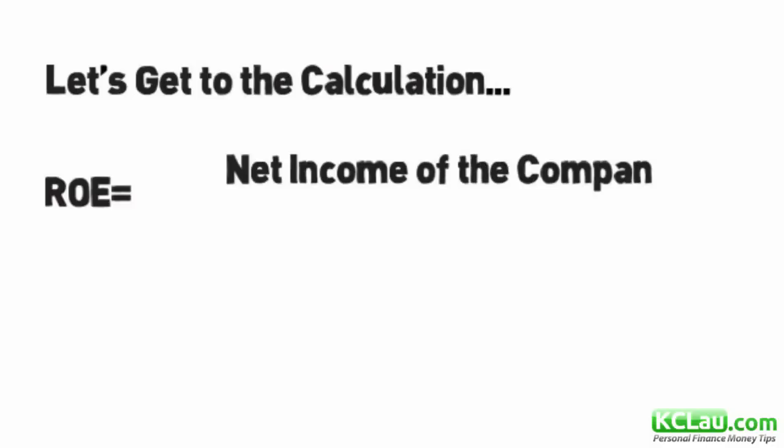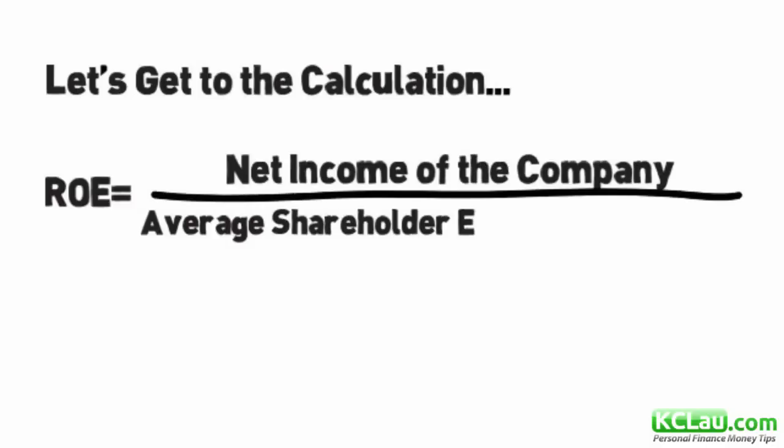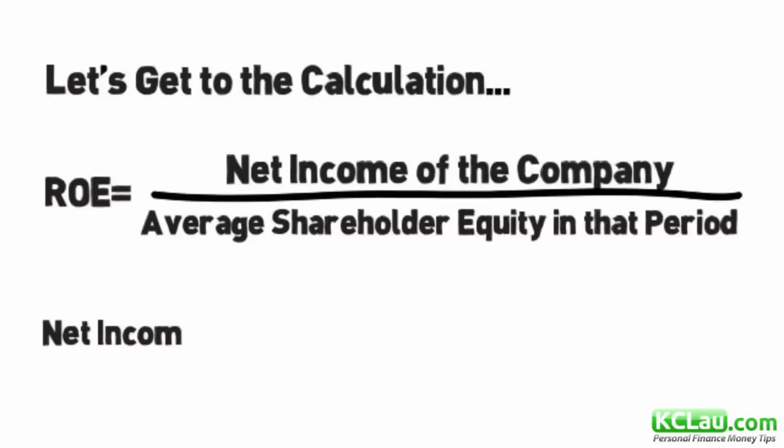Here's the formula for determining return on equity. ROE equals the net income of the company divided by average shareholder equity in that period. The value of ROE is generally expressed as a percentage of the shareholders equity. It indicates the profitability of a corporation, providing the exact value for the profit generated using the shareholders money.